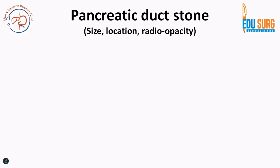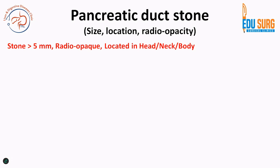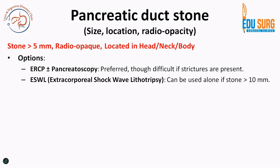For pancreatic duct stones, decision making depends on the size, location, and radio-opacity of the stone. Radiolucent stones cannot be treated with ESWL because they cannot be seen. Large stones may need to be fragmented before extraction. If the stone is in the pancreatic head, it is easier to manage with endoscopy compared to a tail stone. For stones greater than 5 mm that are radio-opaque and located in the head, neck, or body, ESWL is a good option and can be used alone if the stone is greater than 1 cm.